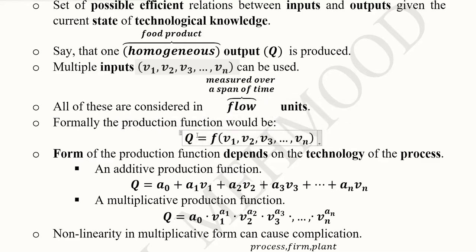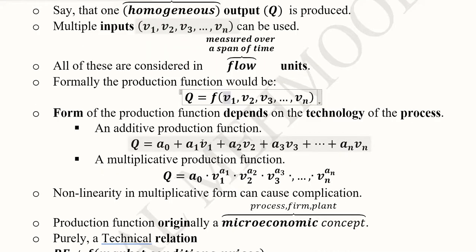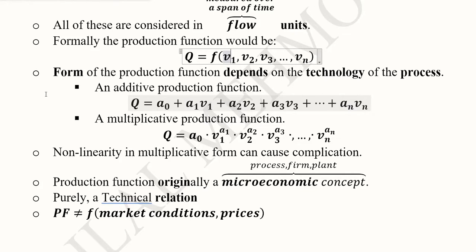A production function in its functional form should look like this: the output is a function of the inputs, which can vary from one to any number of inputs. Then we have the form of the production function - how does it look like when it comes to its equation. It depends upon the technology of the process and how various combinations are made.